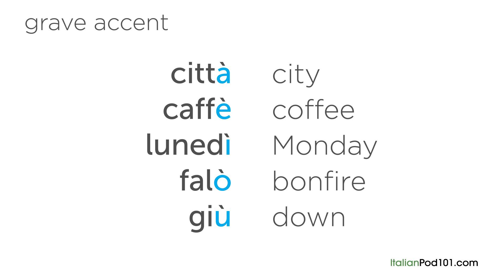The grave accent can only appear over vowels. Any vowel that appears at the end of a word can have a grave accent. The grave accent actually takes away the ambiguity from where to place the stress — it's essentially telling you to stress this vowel. So whenever you see the grave accent in Italian, just stress that syllable.